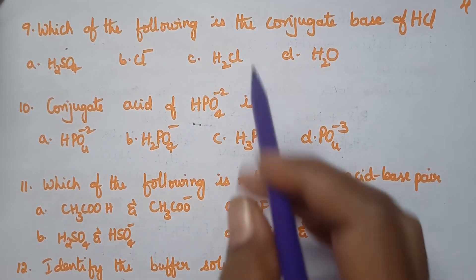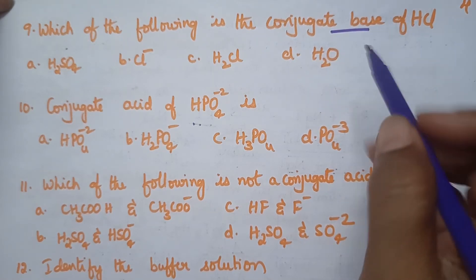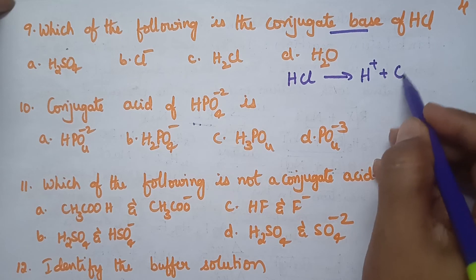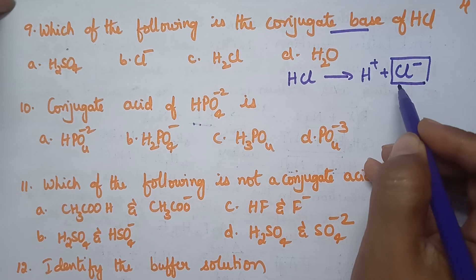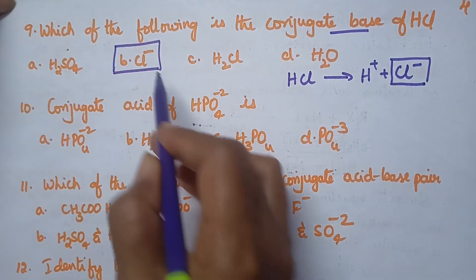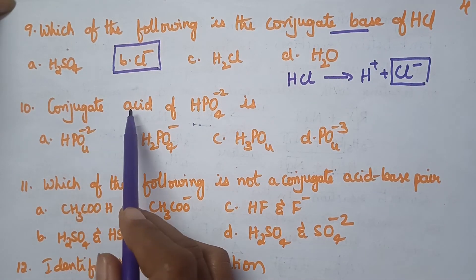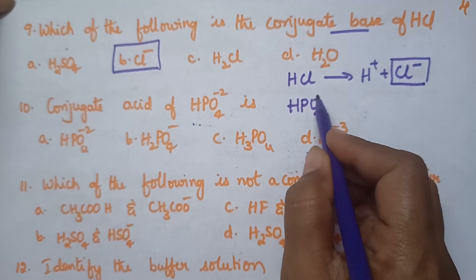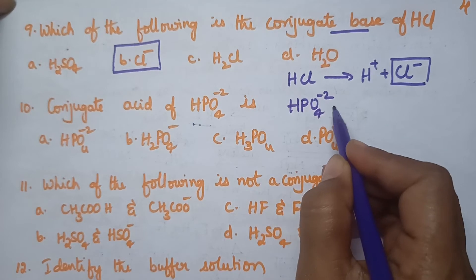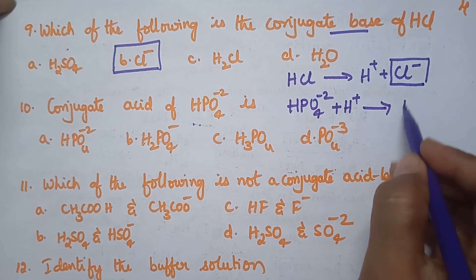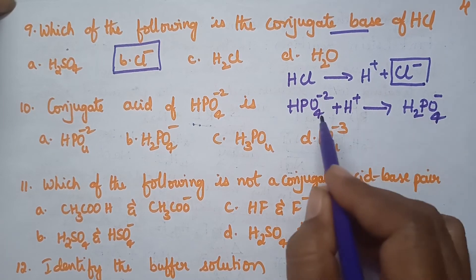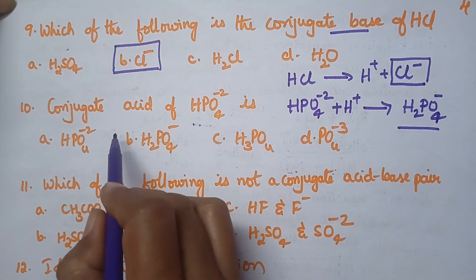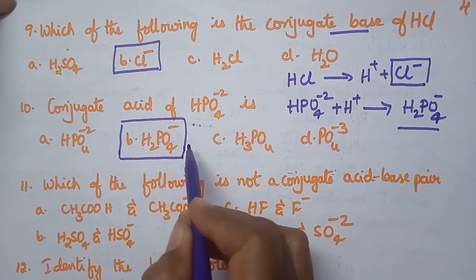Which of the following is the conjugate base of HCl? The conjugate base means HCl is behaving as an acid and donates a proton, leaving Cl⁻. So Cl⁻ is the conjugate base, and option B is correct. Next: the conjugate acid of HPO4²⁻. Here HPO4²⁻ is behaving as a base, so it accepts a proton and becomes H2PO4⁻. So H2PO4⁻ is the conjugate acid of HPO4²⁻, and option B is the right answer.